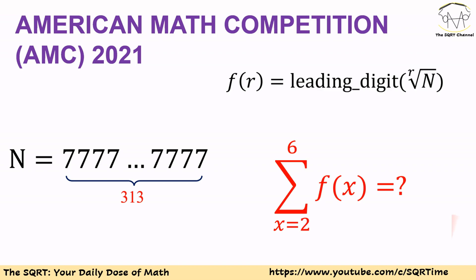Hello everyone. In this video we are going to talk about a problem from the American Mathematics Competition, or AMC, from 2021. In this problem we have a number N that has 313 digits and all the digits are seven. We are interested in the r-th root of N, and f(r) is defined as the leading digit of the r-th root of N. With this definition, we want to evaluate the sigma of f(x) for x equal to two through six.